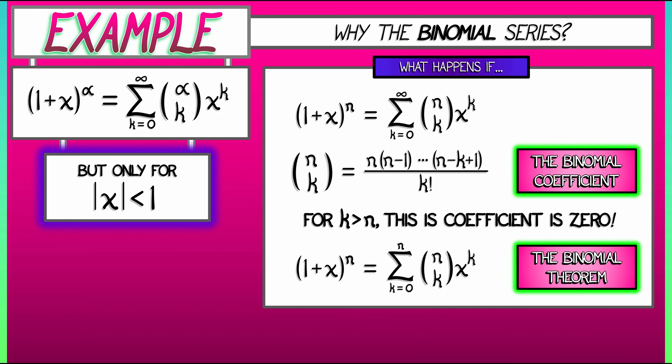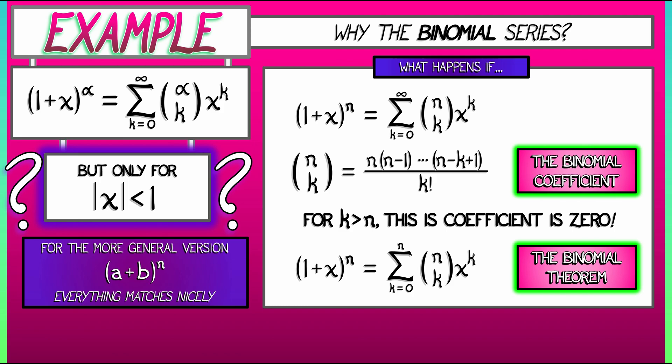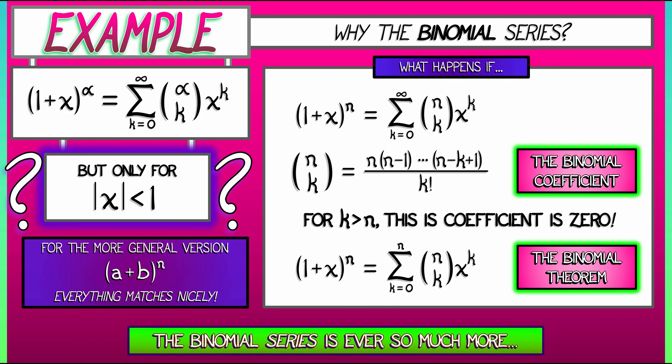Hmm, I wonder why there's no convergence domain involved in this one. And for that more general classical version involving quantity a plus b to the n, everything matches up nicely, as I'll let you check. The binomial series is so very useful, and it's so much more than the classical binomial theorem, which you may have learned. You're going to want to remember this series.